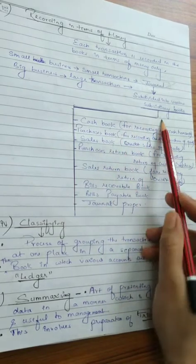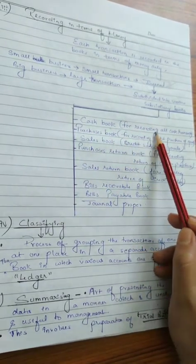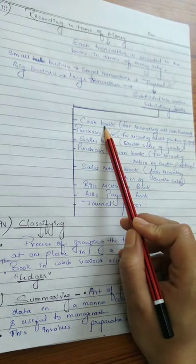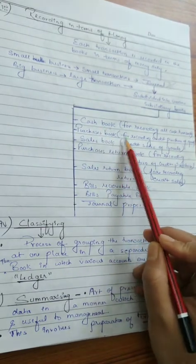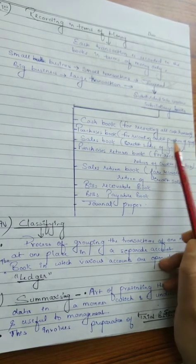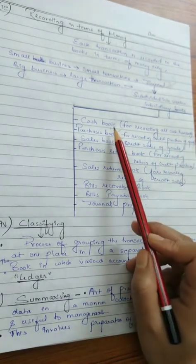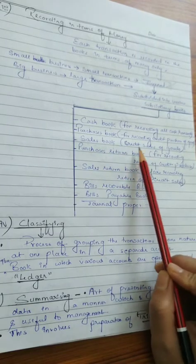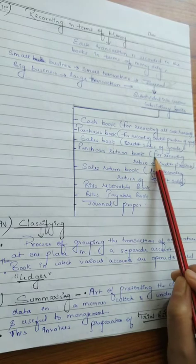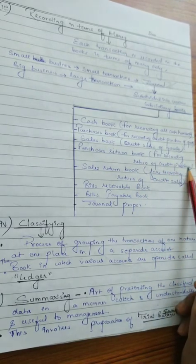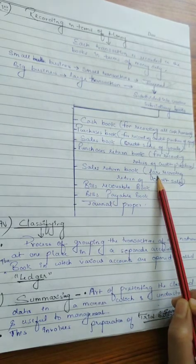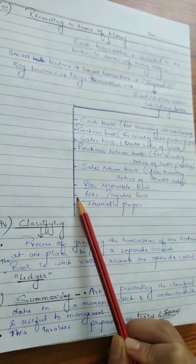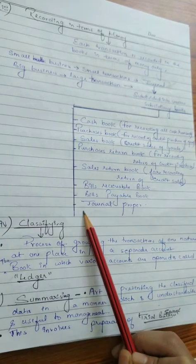There are eight subsidiary books. First is cash book, which is used for recording all cash transactions. Second is purchases book, which is mainly used for recording credit purchases of goods, as cash purchases are already recorded in the cash book. Third is sales book for recording credit sales of goods. Fourth is purchases return book for recording return of credit purchases. Fifth is sales return book for recording return of credit sales. Sixth is bills receivable book, seventh is bills payable book, and eighth is journal proper.